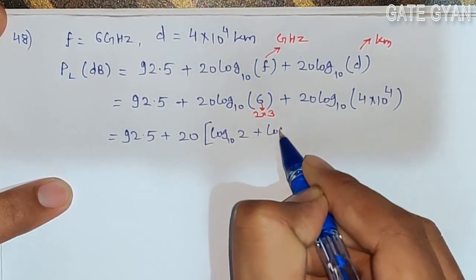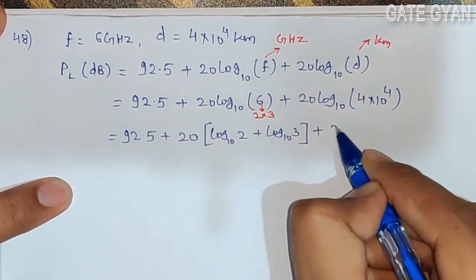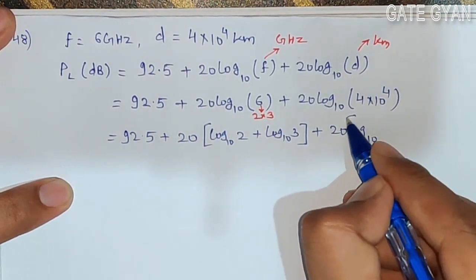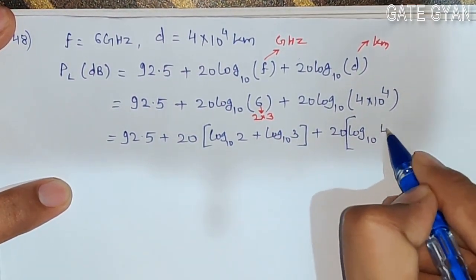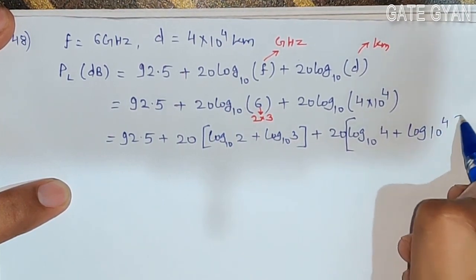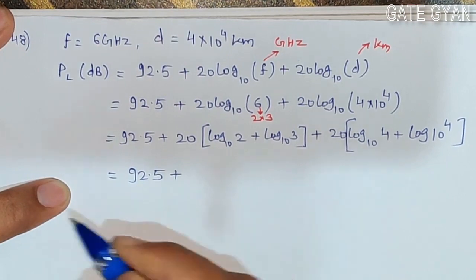Plus 20log₁₀, here it can also be written as 10⁴ and log of 10⁴. Simplify it and further solve.